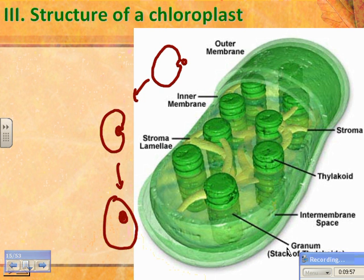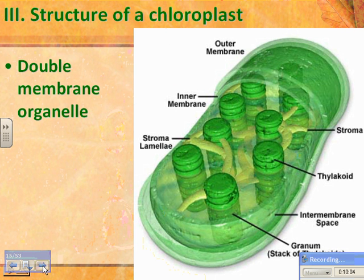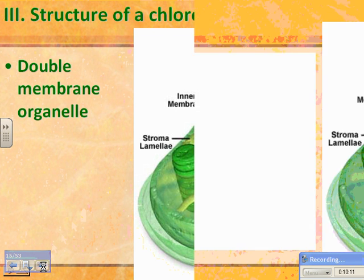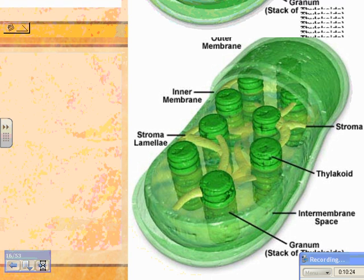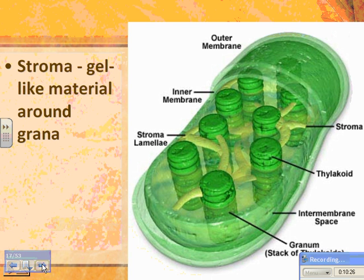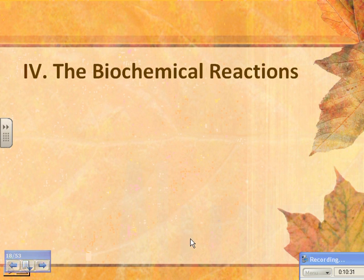The goop inside the chloroplast is called the stroma — it's like cytoplasm for a chloroplast. This is a double-membraned organelle, which is evidence it evolved from a prokaryote, along with it having its own DNA and ribosomes. The thylakoid is the most important part here because chlorophyll is embedded in the thylakoid membranes. The stroma is the gel-like material surrounding these sacs.